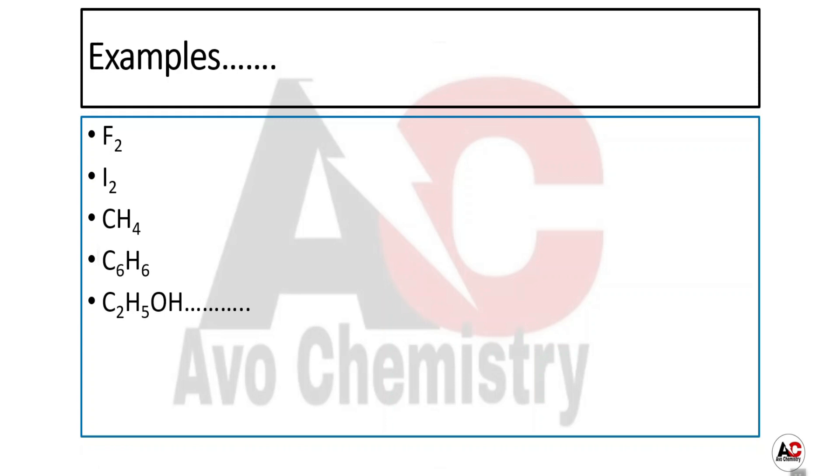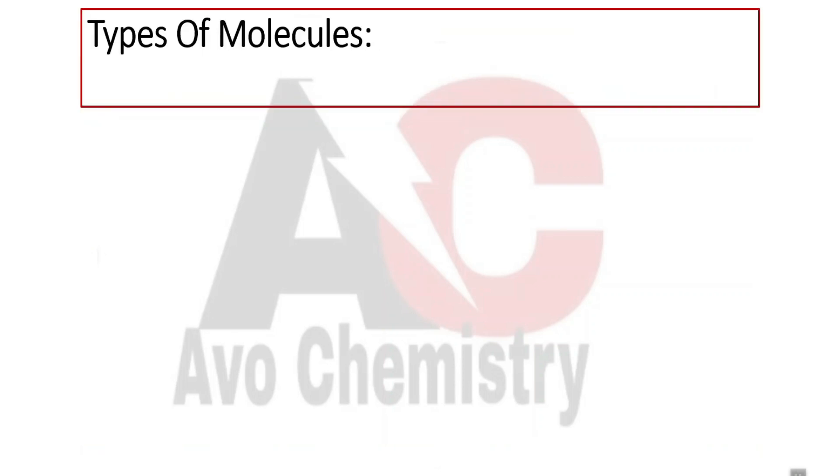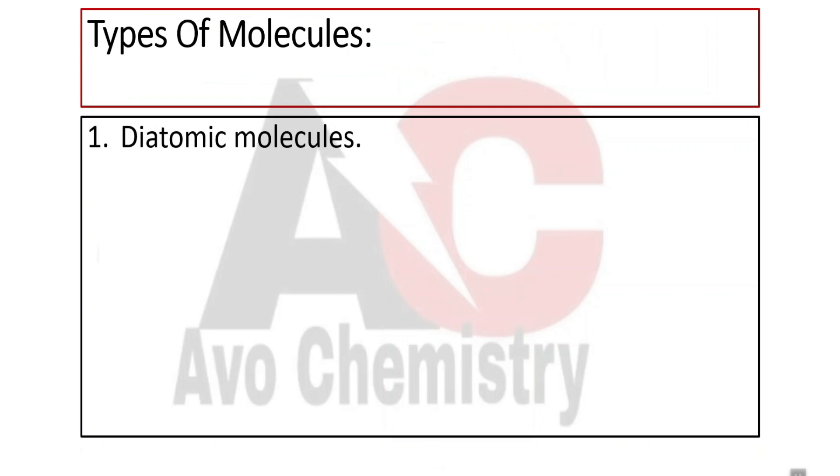Now, types of molecules. There are mainly two types: diatomic molecules and polyatomic molecules. Diatomic molecules are when two atoms are chemically bonded together.